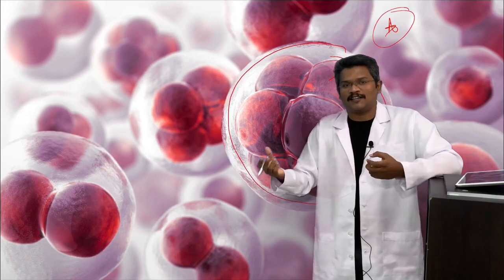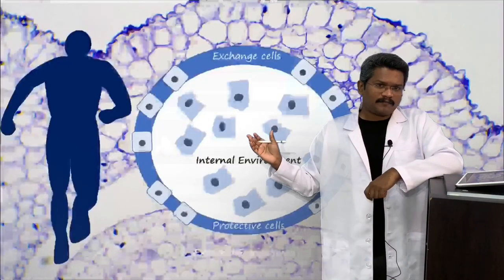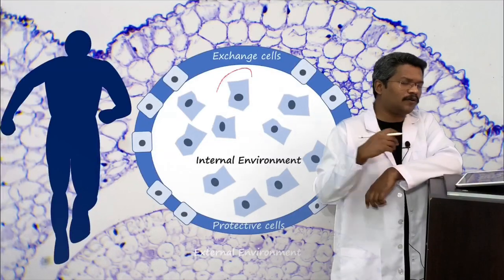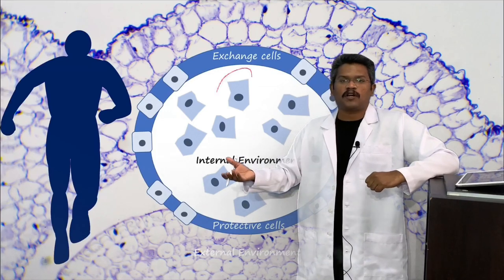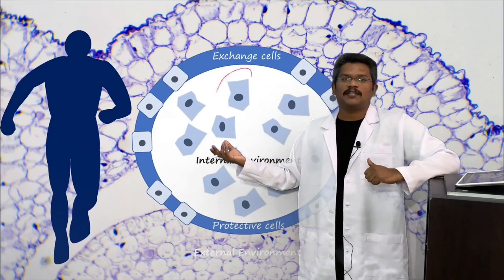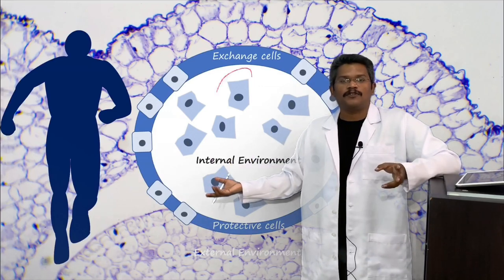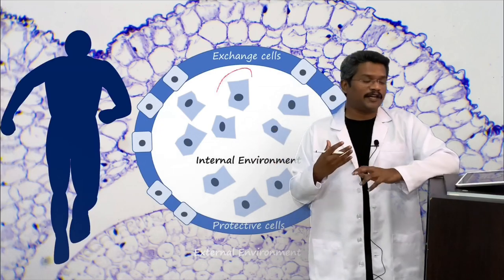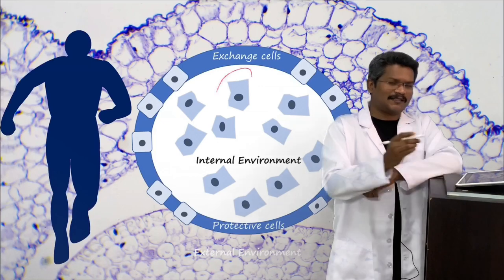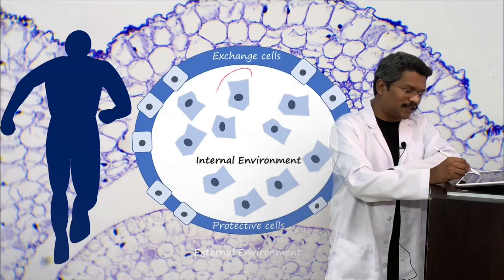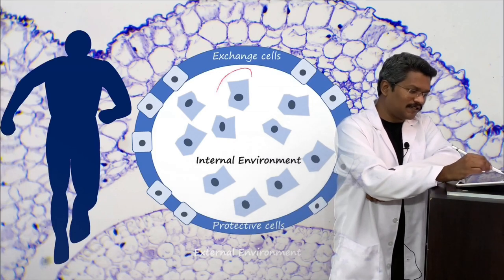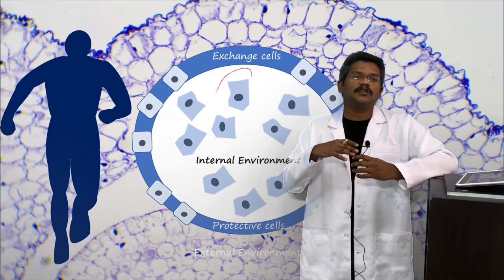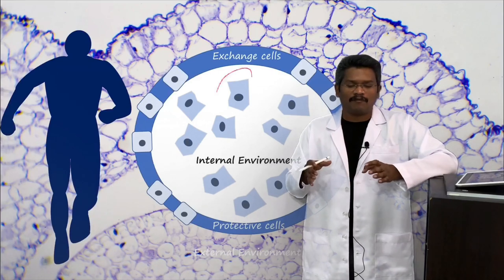If you take a human body, it has trillions of cells. Cells in different organs perform different functions — an RBC transports oxygen, a nerve cell transfers information, and a muscle cell produces force. Collectively they all try to maintain the conditions in the internal environment as stable and constant. It is surrounded by protective cells, and there are exchange cells which transfer energy and biomolecules with the environment.